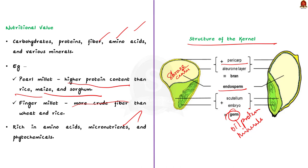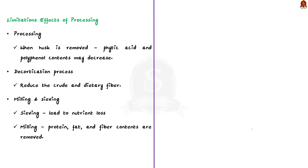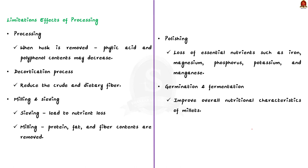Processing and polishing millets can affect the nutrient content in various ways. When the husk is removed, phytic acid and polyphenol contents may decrease. The decortication process, which involves removing outer coverings, can reduce crude and dietary fiber. However, this process also enhances edibility and visual appeal, making processed grains attractive for marketing. Milling — grinding grains into flour and sieving to remove impurities including bran — makes the flour more digestible and accessible to the body, but may lead to nutrient loss due to removal of bran. When grains are milled for a longer time, more protein, fat, and fiber content are removed.